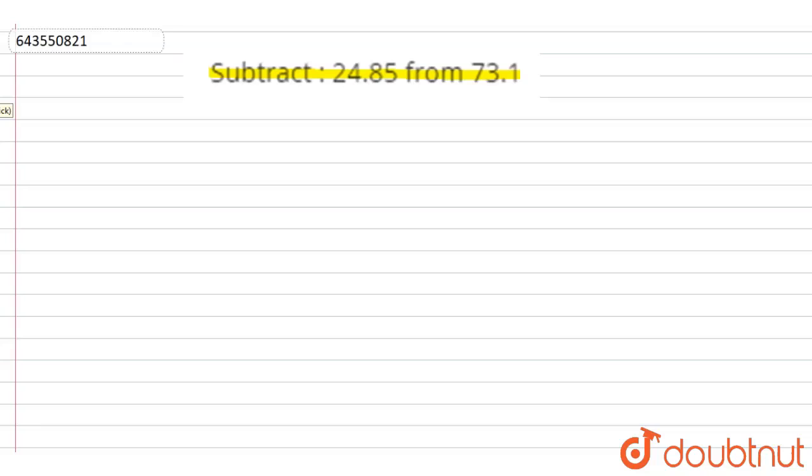We need to take this thing in our mind: whenever we are subtracting decimals, point has to be placed below point. This needs to be written as 24.85 and we can add number of zeros after decimals.